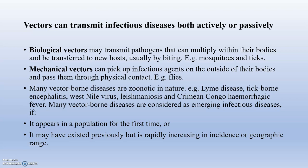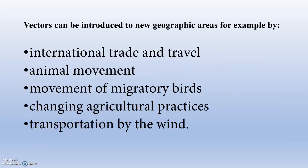Emerging infectious diseases appear in a population for the first time, or may have existed previously but are rapidly increasing in incidence or geographic range. Vectors can be introduced into areas previously under control through international trade and travel, animal movement, movement of migratory birds, changing agricultural practices, and transportation.